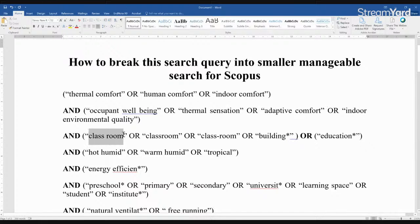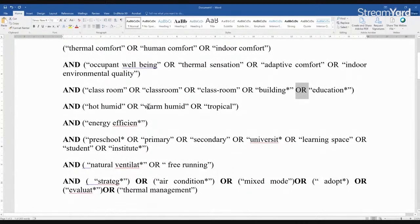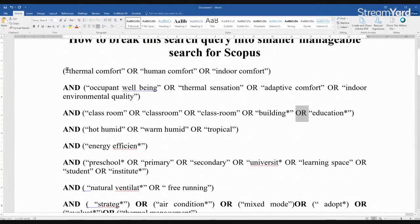Then the next concept is classroom, classroom, variations of the term classroom or building or education buildings. So I might just take, get rid of this bracket of OR. Let's keep an OR like this. We are talking about thermal comfort in classrooms, in hot and humid or warm, humid or tropical environments. Okay. So that is, seems like the three core concepts.